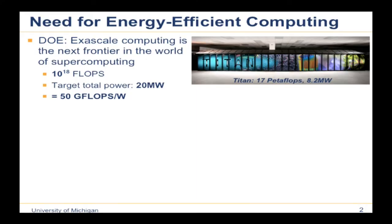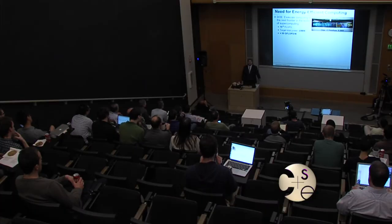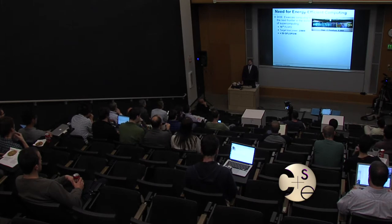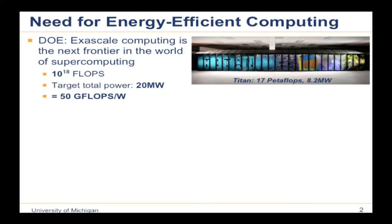Today's talk is about energy efficient architectures. I'm going to talk about two different techniques to achieve energy efficient designs. Energy efficiency is becoming important not just in the traditional space of small mobile devices, but across the stack. The Department of Energy's exascale program is trying to build a system that can achieve an exaflop — 10 to the 18 floating point operations per second — within a power budget of 20 megawatts, leading to an efficiency target of 50 gigaflops per watt.